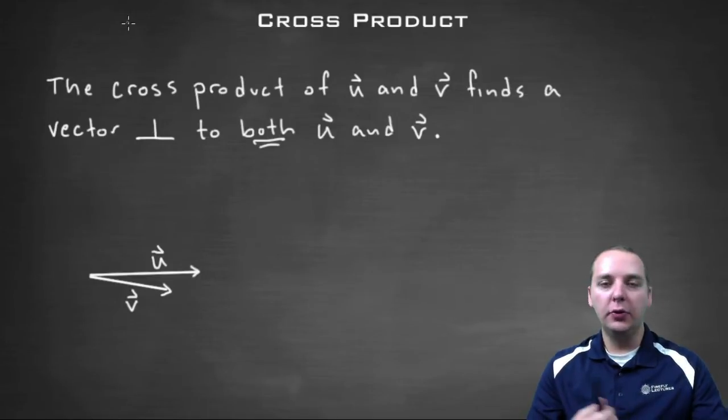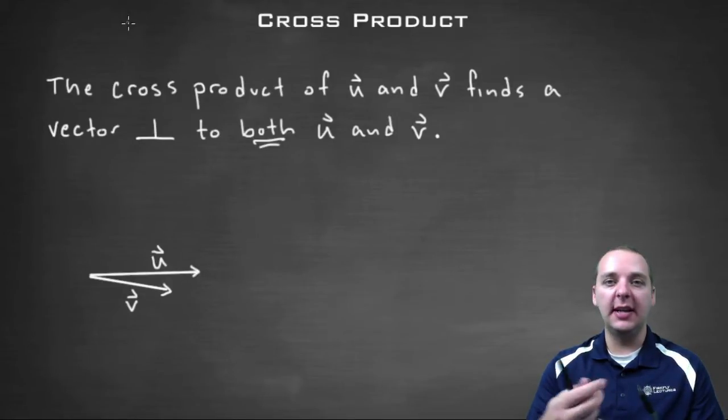A new vector whose special property is that it's going to be orthogonal, which means meets at a ninety degree angle, same as perpendicular. It's going to be orthogonal to both of the other two vectors.